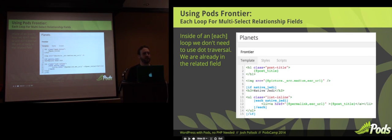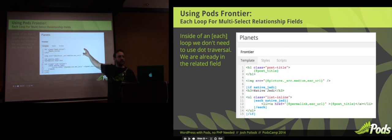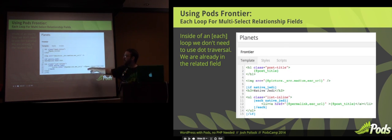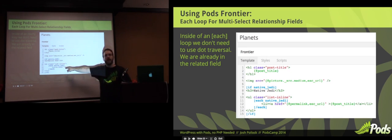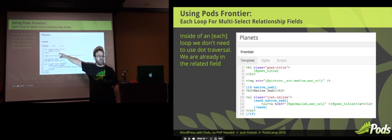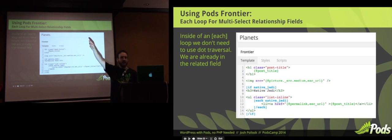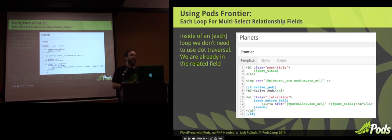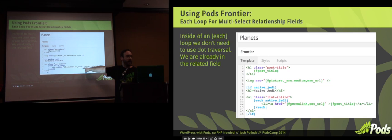What if you want to refer back to the parent post title? That has to happen before the each loop. Once we do each native_jedi, because it's a relationship field, it's as if we're inside that related post type — so post_title refers to the post title of the related item. If you put post_title before the each loop, that's the post title of the parent. Once we're inside the each, we're no longer in the current post. So that Tatooine post title versus Luke Skywalker — those show two different things.